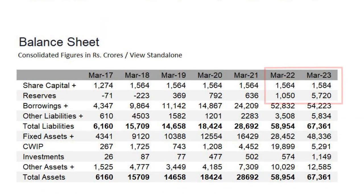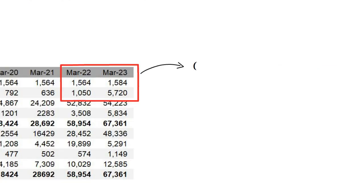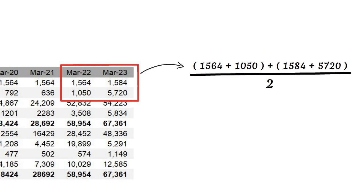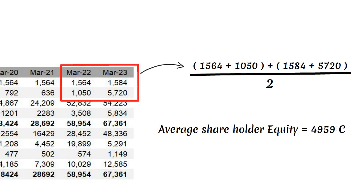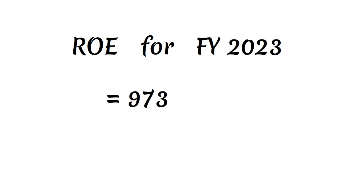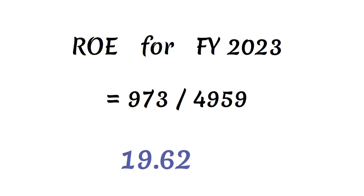Additionally, we require the average shareholder equity, which can be calculated by summing up the share capital and reserves for FY 2022 and FY 2023 and dividing the total by 2. Consequently, the average shareholder equity is computed as 4,959 Crores. The ROE for FY 2023 is then determined as 973 divided by 4,959, resulting in a healthy figure of 19.62%.